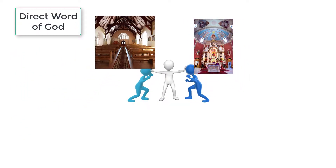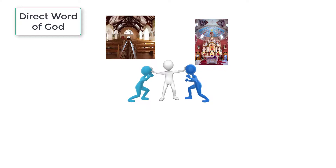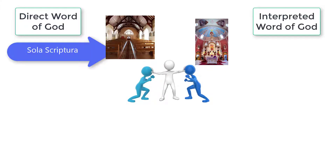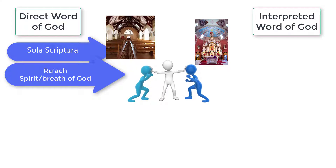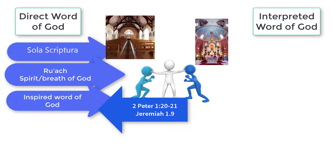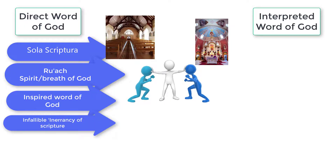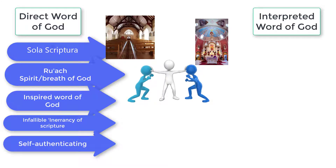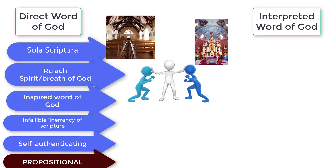Some Christians see the Bible as the direct word of God, whereas others see it as the interpreted word of God. Sola Scriptura is the belief that the Bible has supreme authority in matters of doctrine and practice. The Bible is the literal word of God; the authors had God's breath — ruach — breathed into them directly, word for word. The Bible is therefore the inspired word of God, as confirmed in the books of Peter and Jeremiah. The Bible is therefore infallible, without error and timeless. Scripture is self-authenticating; its meaning presents itself and interprets itself, offering propositional revelation. If it says God created the world in six days, then a literal or fundamental Christian would believe it happened as said. This is the view held by more evangelical Protestant Christians.